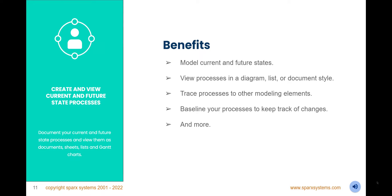Create and view current and future state processes. In this topic, you will learn how to document your current and future state processes and view them as documents, sheets, lists, and Gantt charts. By the end of the topic, you will have seen benefits including: model current and future states, view processes in a diagram, list, or document style, trace processes to other modeling elements, baseline your processes to keep track of changes, and more.